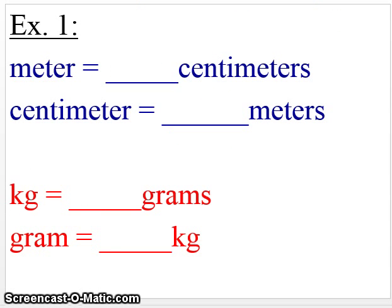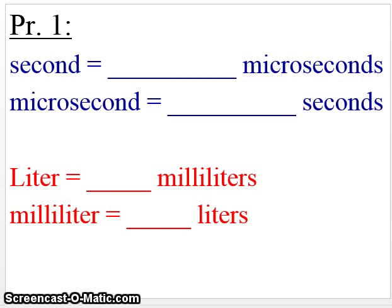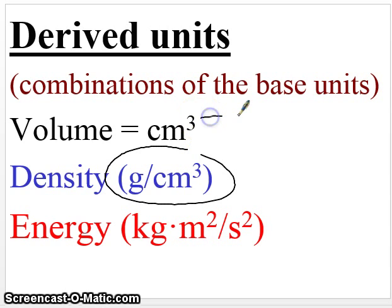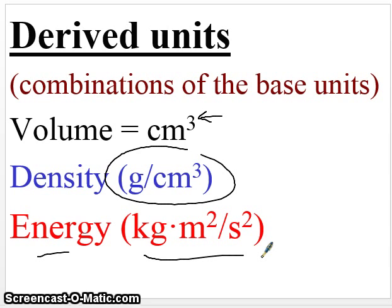Go ahead and pause the video and try the prefix conversion example yourself, and we'll go through it in class. If units are derived — meaning more than one unit is combined together — these are called derived units. For example, grams per centimeters cubed, or energy units. You don't have to memorize derived units; just realize that 'derived' means a combination of base units.